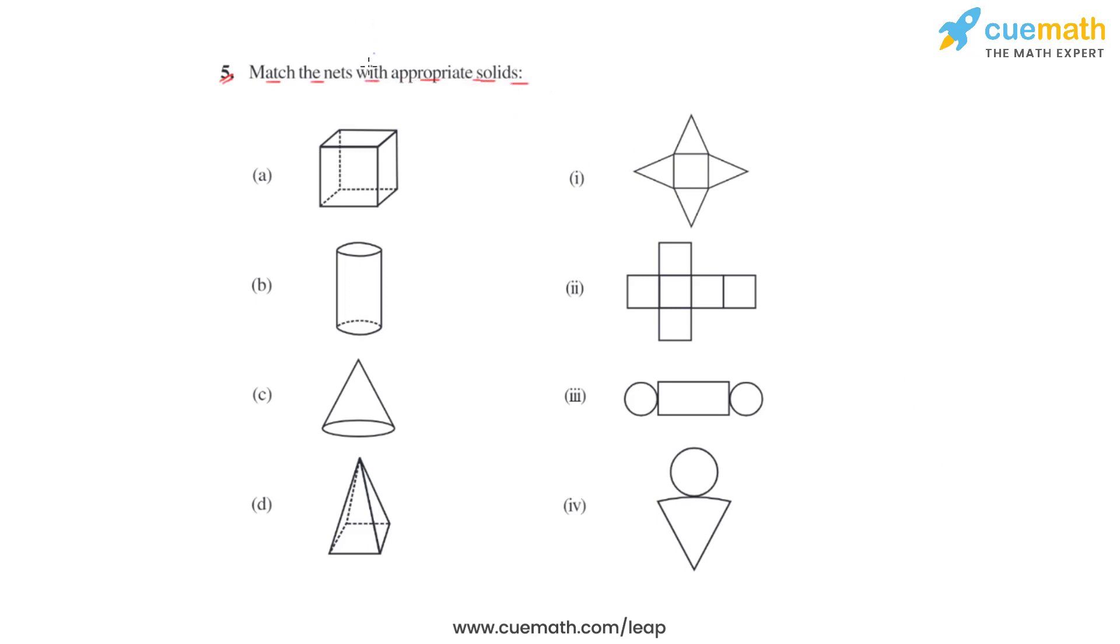In this question, we see there are two sets of figures. This is the set of solids and this is the set of nets. Let us take each of the solids one by one to find out their respective nets.